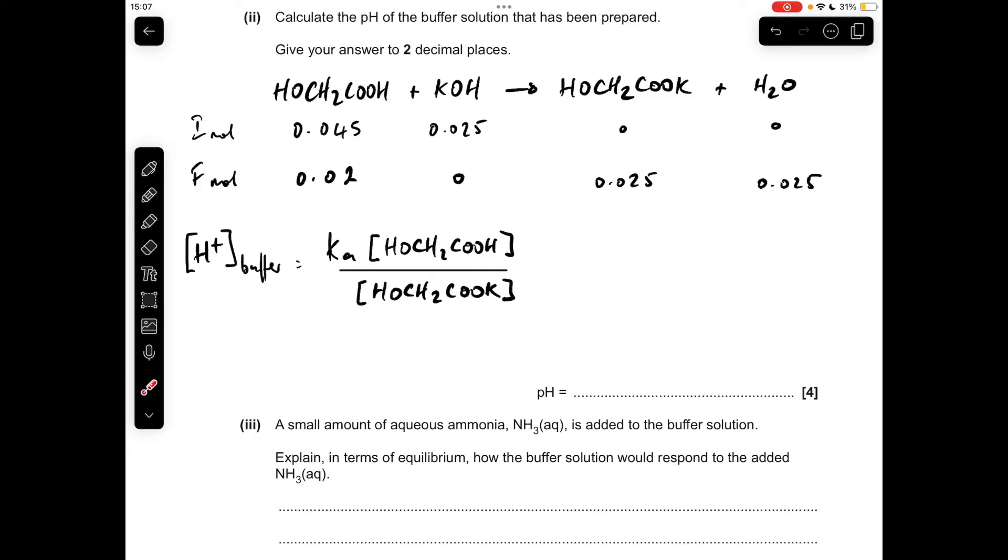So all I need to do now is put in the numbers. So there's the numbers in there. I'll just quickly talk through them. The Ka of the acid wasn't given. It was the pKa, so Ka is 10 to the minus pKa. The acid concentration will be the moles divided by the volume that everything's in, which is 100 cm cubed, which is 0.1 of a decimeter cubed. And the concentration of the salt will be its moles over that combined volume.